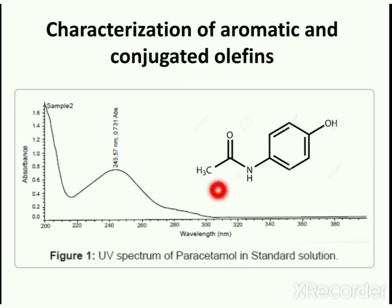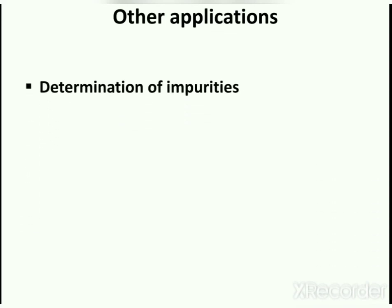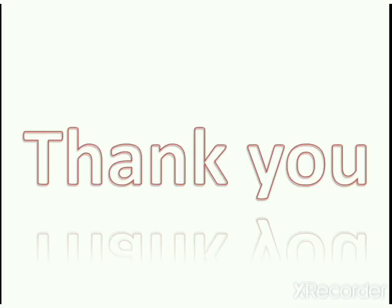This peak is for paracetamol, so we can say 243.57 nanometers is a unique range for paracetamol. If you have to detect paracetamol in any sample, you will obtain the spectrum of the test sample by ultraviolet spectroscopy and then check whether there is any peak at 243.57 nanometers. Other applications of ultraviolet visible spectroscopy include determination of impurities and detection of isomers of the test sample.